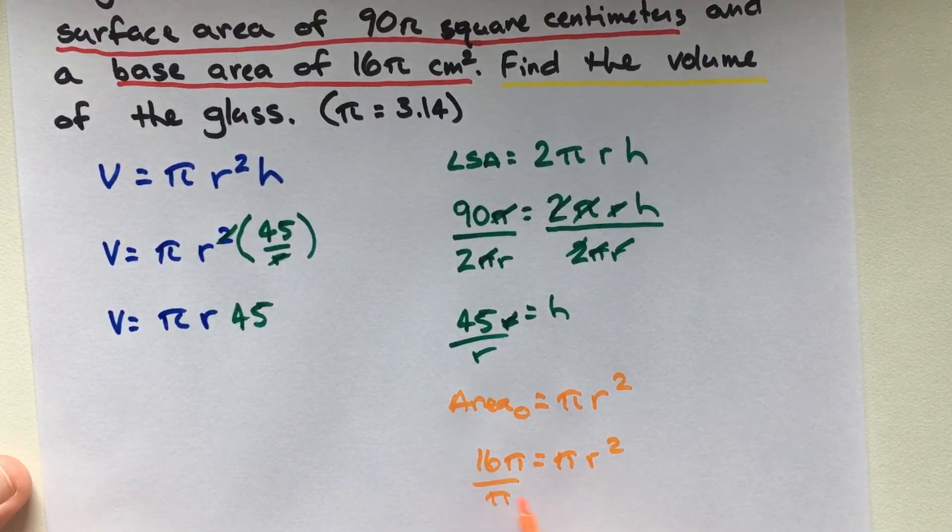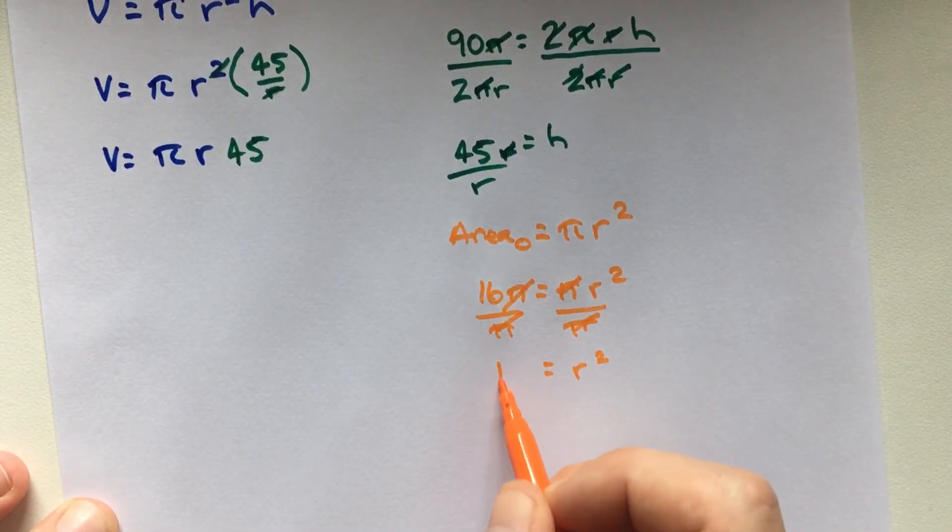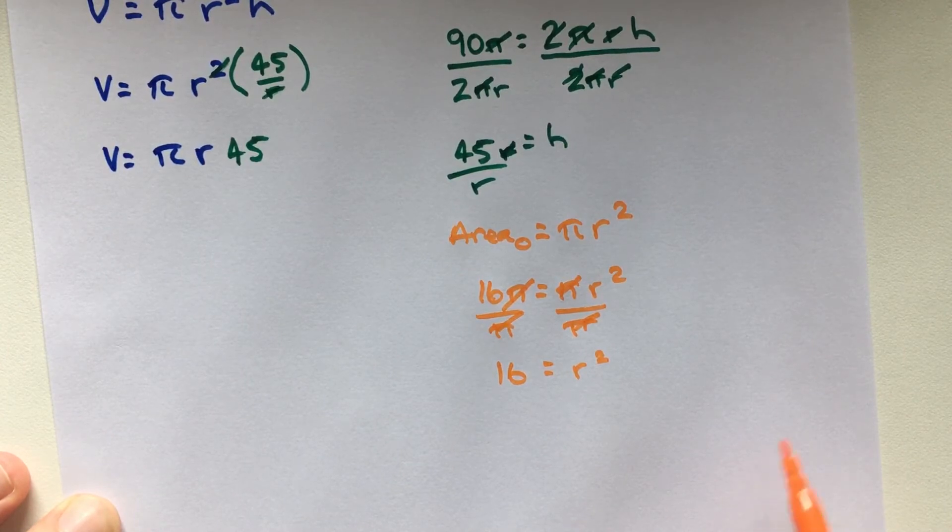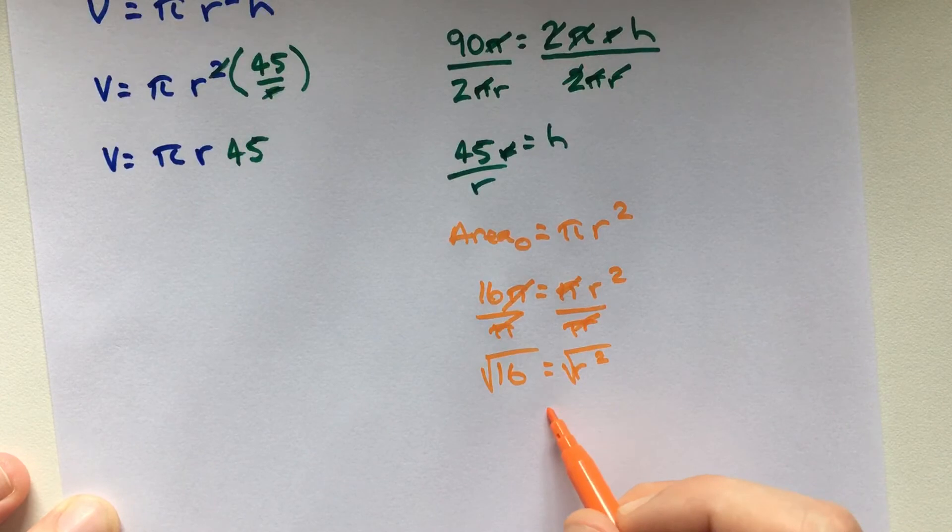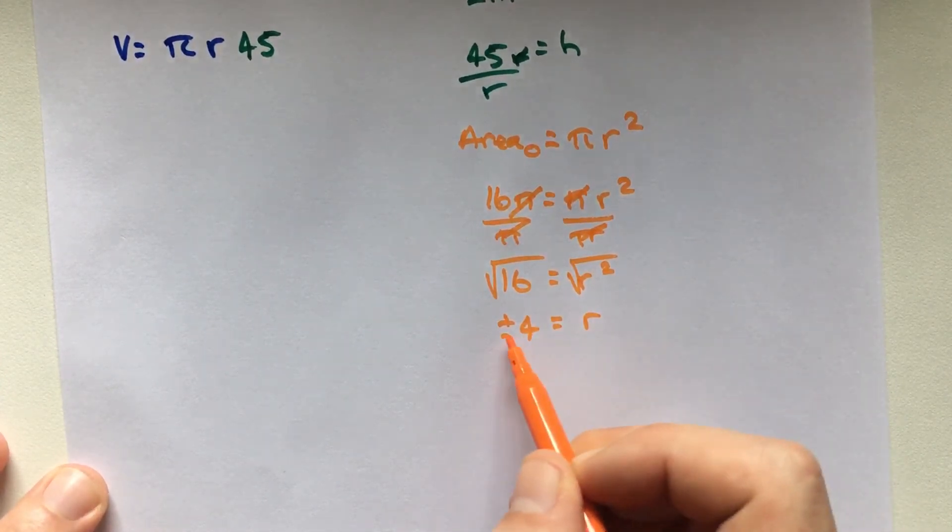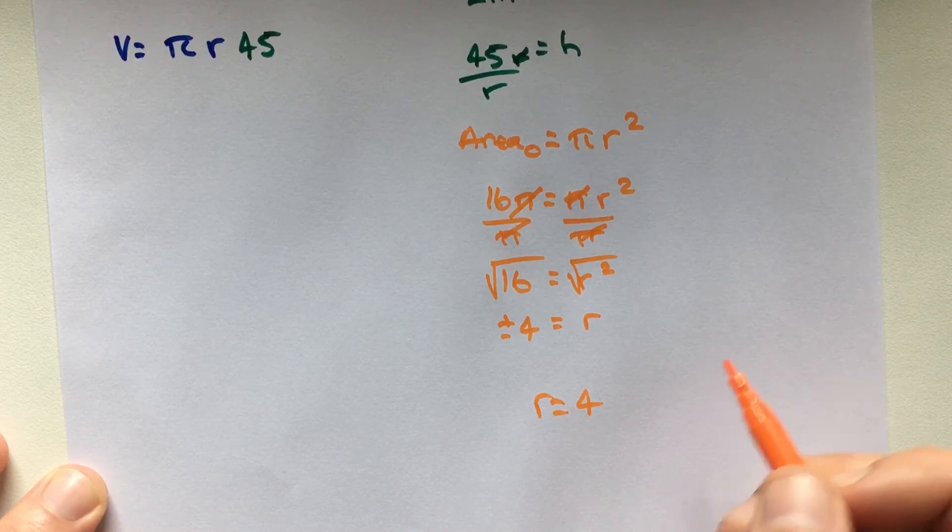We can divide by π. These are going to cancel. So we're left with r² equals 16. To find r, we're going to take the square root of both sides. So r is going to be plus or minus 4. Now, because we're dealing with a measurement, we're not going to have the negative. So our radius is going to equal 4 centimeters.